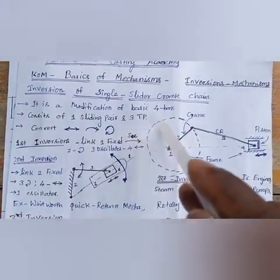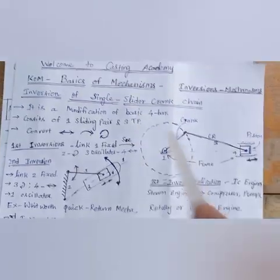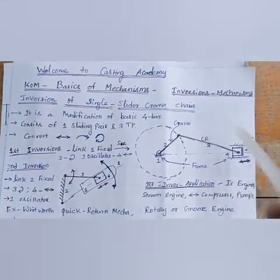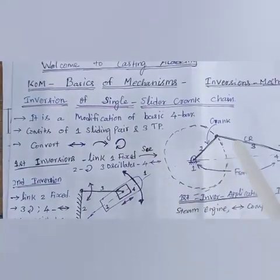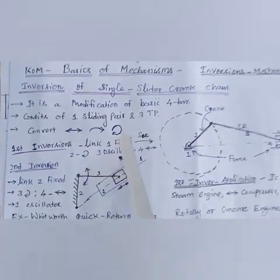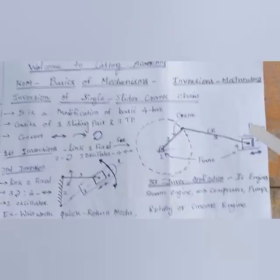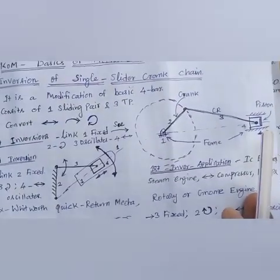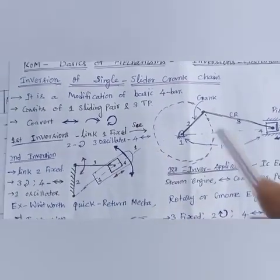The inversion of the single slider crank chain mechanism consists of one sliding pair and three turning pairs. Here is the sliding pair, and one, two, three — three turning pairs. It mainly converts reciprocation into rotary motion, like in steam engines. Now we cover its inversions.